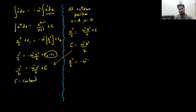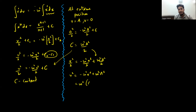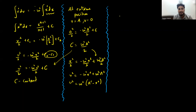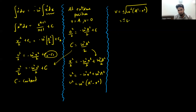So we get v² = ω²(A² − x²), which means velocity v = ±ω√(A² − x²). This is the expression for velocity in SHM. Simple and easy.